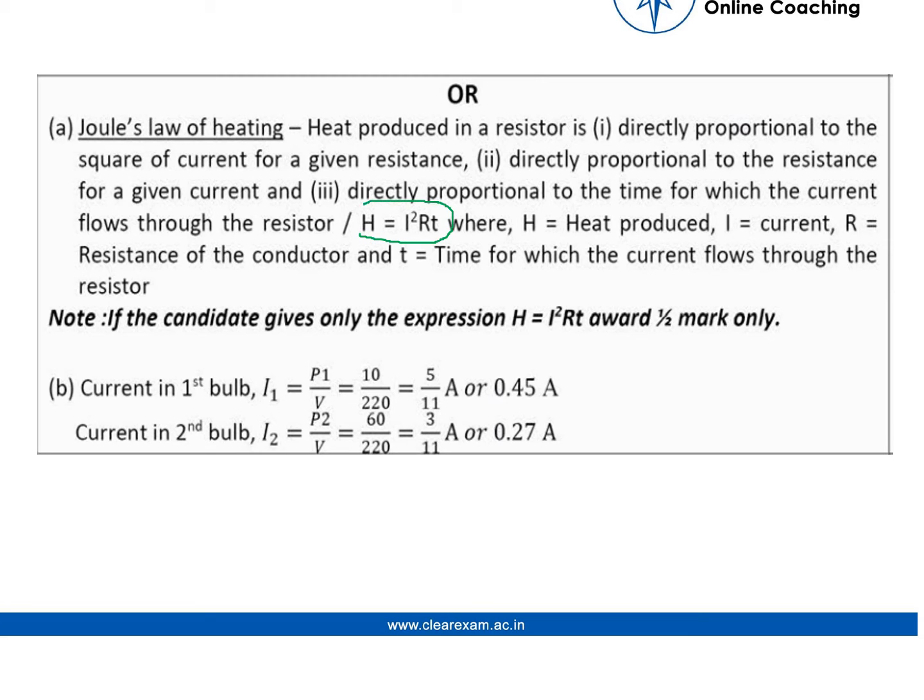So the formula comes here: H equals I²Rt. I hope everyone gets it, where H is heat produced, I is current, R is the resistance of the conductor, and t is the time for which the current has been flowing through the resistor.